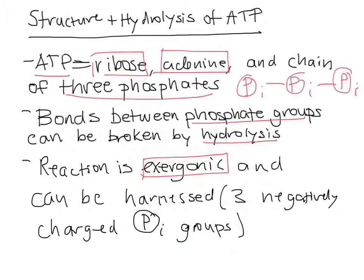The reason why the hydrolysis of ATP produces so much energy is because the three phosphates are all negatively charged groups, and they're not stable together in one component. If one phosphate is removed, the remaining structure, which is called ADP, will be much more stable.